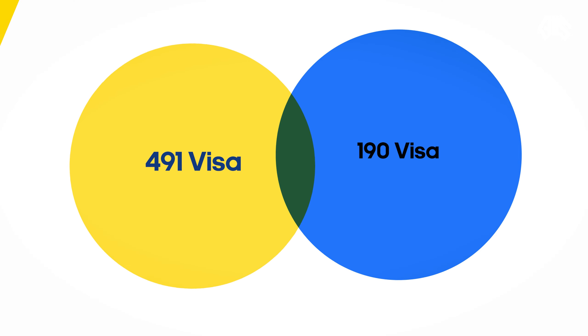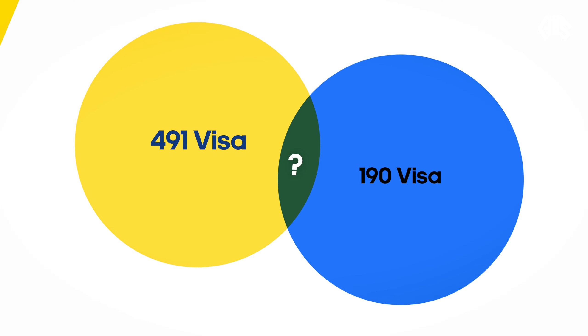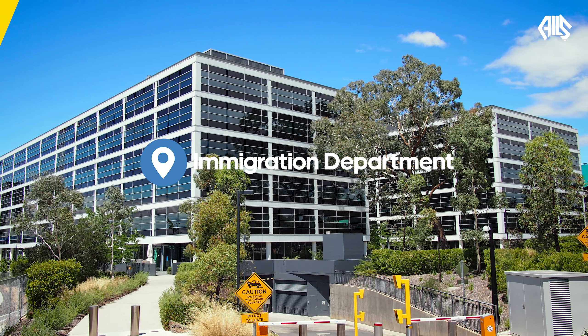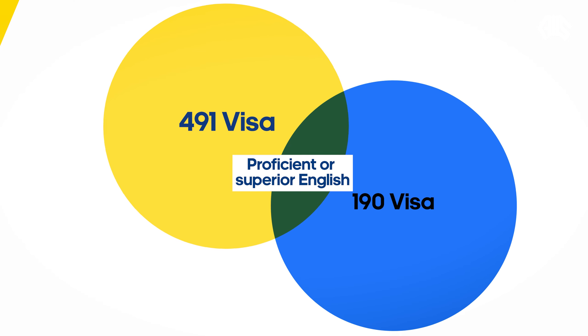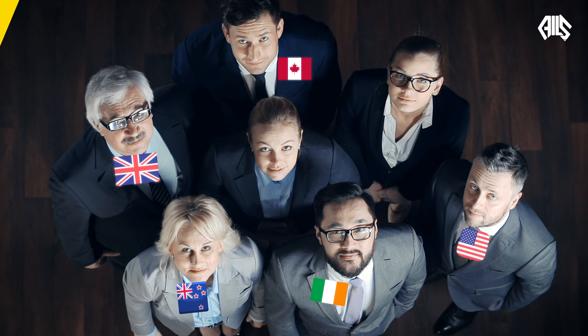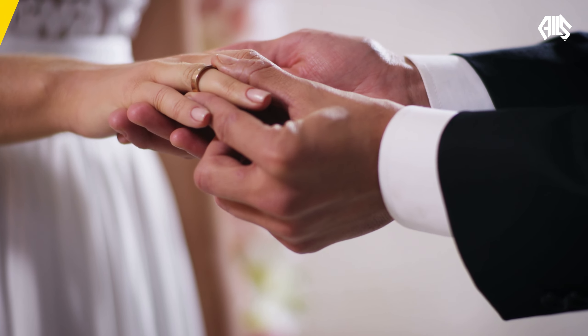For both the 491 and the 190 visa, there are some common criteria for both nominations. You need to meet English requirements of the immigration department's definition of proficient or superior English. However, if you have a passport from the United Kingdom, America, Canada, New Zealand, or Ireland, you do not have to complete an English test to meet these levels. If you plan to claim points for your spouse or partner, you must have proof of the relationship — either a marriage certificate, a civil partnership, or a union certificate. Unfortunately, you cannot claim points if you are in a de facto relationship.